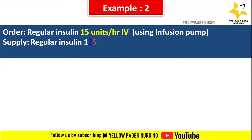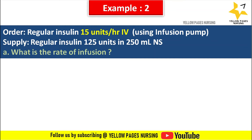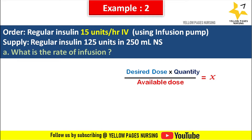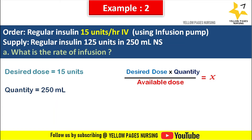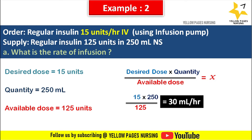One more example: doctor's order is regular insulin 15 units per hour IV using infusion pump. Supply is regular insulin 125 units in 250 ml NS. What is the rate of infusion? The formula is desired dose multiplied by quantity divided by available dose. Here the desired dose is 15 units, quantity is 250 ml, and available dose is 125 units.